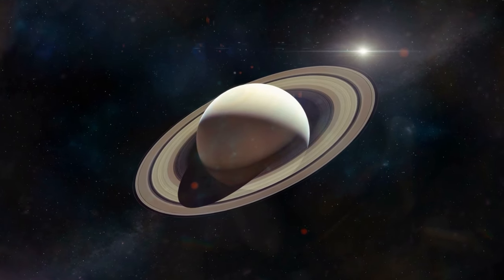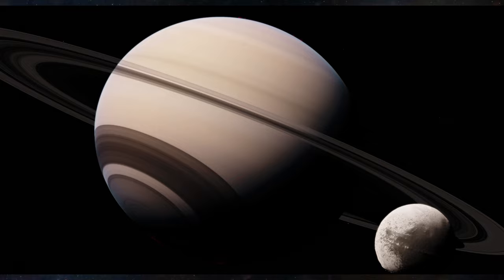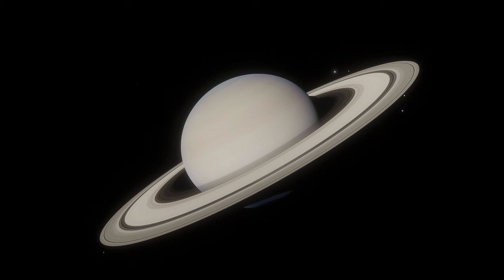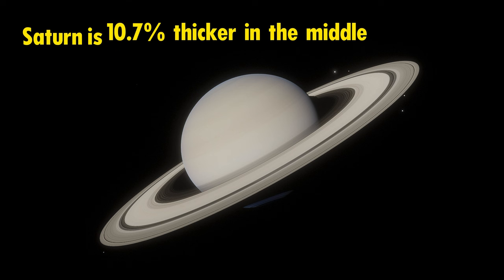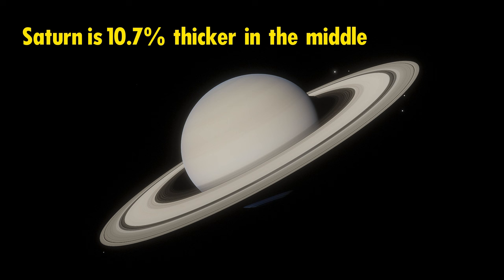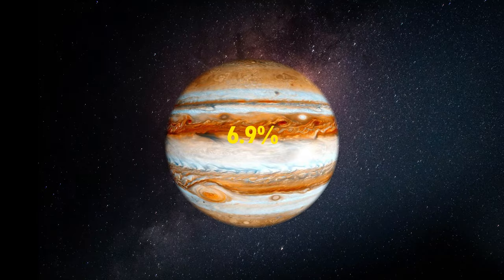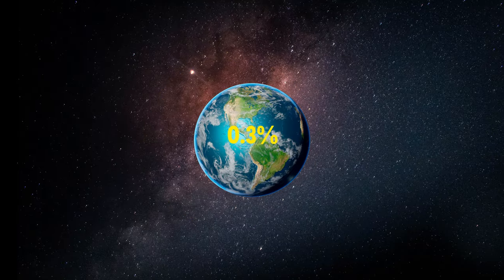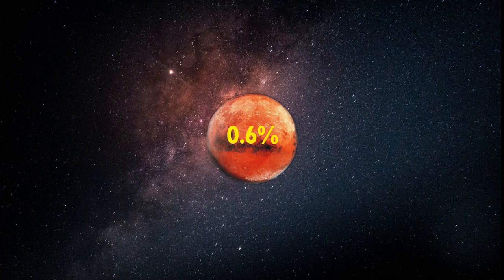Alright, so Saturn, have you ever seen its image? Did you notice anything weird about it? I mean besides the ring. You can pause here and comment below. So Saturn is flat, I mean it's 10.7% thicker in the sides. Which makes it flatter, meaning it's closer from one pole to another than from one side to another side. It's not only Saturn, Jupiter is 6.9%, Earth is 0.3% and Mars is 0.6%.